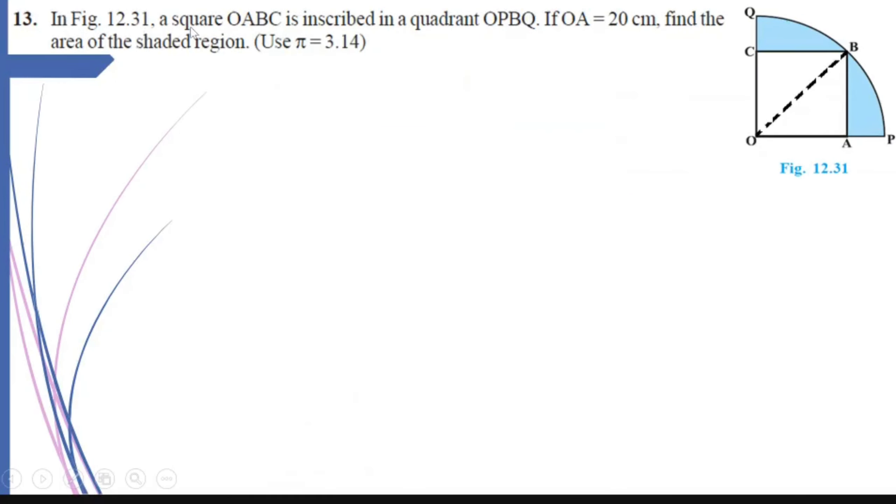In figure 12.31, a square OABC is inscribed in a quadrant OPBQ. If OA is 20 cm, find the area of the shaded region. Use pi equals 3.14.